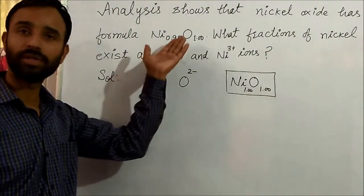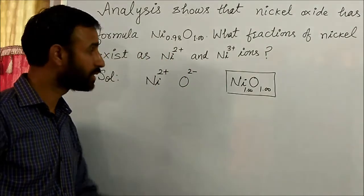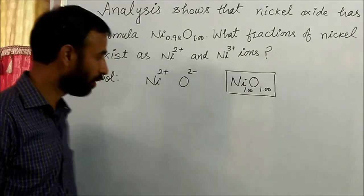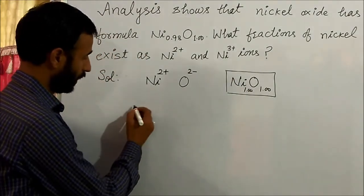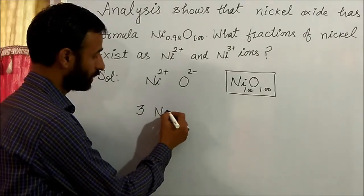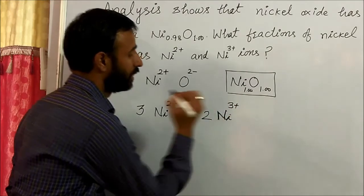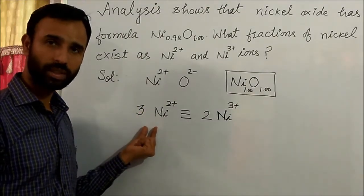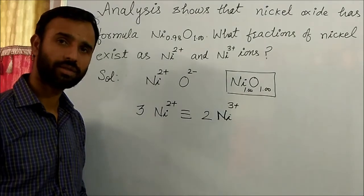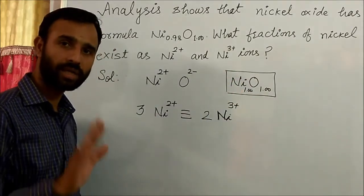Since we have 0.98, that means there is a mixed amount of 2+ and 3+, meaning some Ni²⁺ are replaced by Ni³⁺. If we remove three Ni²⁺ ions, that is equivalent to adding two Ni³⁺ ions. So if three Ni²⁺ ions are removed, they are replaced by two Ni³⁺ ions. How many nickels are lost? Three Ni²⁺ are removed and two Ni³⁺ are added.